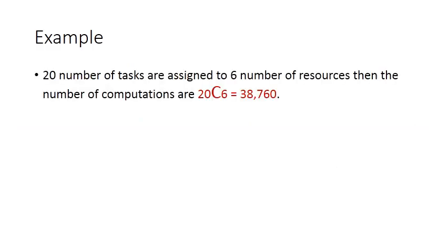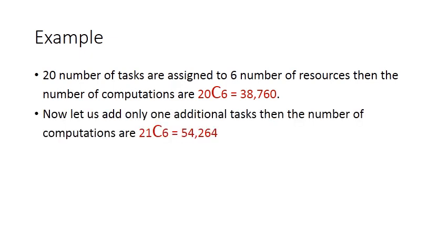Let us see with a simple example. 20 tasks are to be assigned to 6 resources. The number of computations required is 20C6, which equals 38,760. Now, if we increase by only one additional task, the number of computations increases to 54,264.